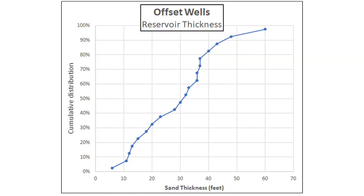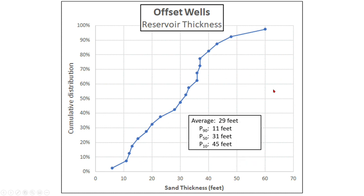The second thing we have to estimate is the reservoir thickness. The best way to do it is to look at the offset wells and how thick they are. We plot each well's thickness from the offset wells on a cumulative distribution plot, just to give us an idea of the range of thicknesses in the area. We can get the average of the offset wells, the P90, P50, and P10 values, and use that data to help estimate the expected thickness for our prospect.